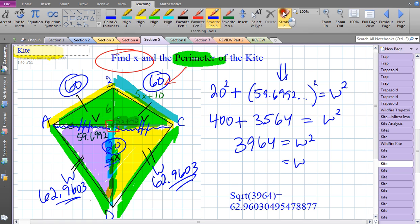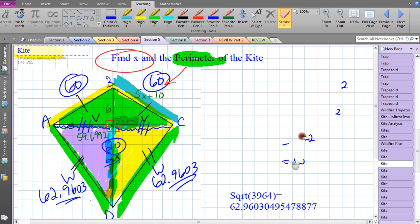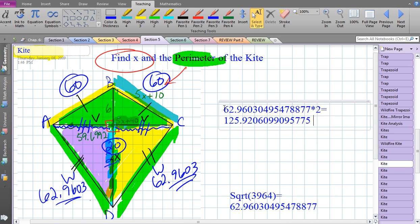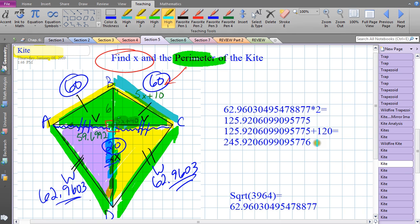We are so close to finishing - we just have to find the perimeter of this kite, which means I have to add up four numbers. If I take this number right here and all of its decimals, I'm going to times it by 2 - I get 125 something. Then I'm going to take that number and add 120 to it, because that is 60 plus 60. I should be able to come up with the answer, and that is 245.92 etc.